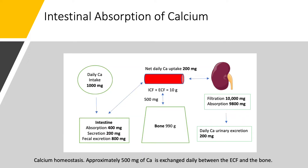Let's look at this diagram. With a daily intake of 1,000 milligrams, the small intestine absorbs 400 milligrams, but 200 goes back into the intestinal secretions, giving a net daily uptake of 200 milligrams. 800 milligrams go into the stool as fecal excretion, and 200 milligrams go into the urine. The kidneys filter 10,000 milligrams and reabsorb 9,800. The bones contain 990 grams of calcium, while intracellular and extracellular fluid contain only 10 grams, with a 500 milligram daily exchange between these compartments and bone.